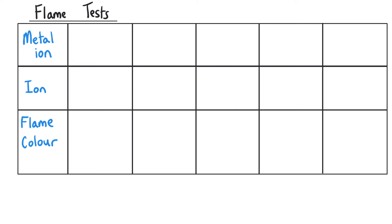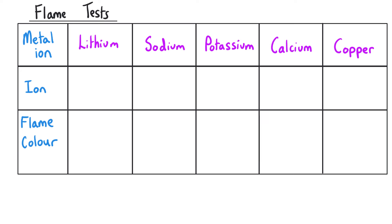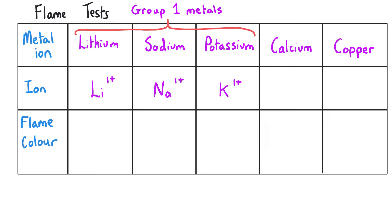There are five metal ions you need to identify using the flame test: lithium, sodium, potassium, calcium, and copper. Their charges are Li⁺ for lithium, Na⁺ for sodium, and K⁺ for potassium — all in group one of the periodic table, with one outer shell electron removed. Calcium is in group two, forming a 2+ charge, and copper also forms a Cu²⁺ ion, taking its symbol from Latin.